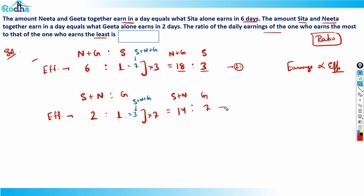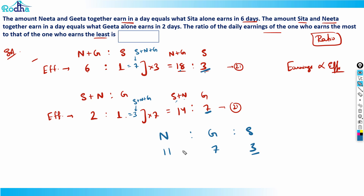From these values I can extract individual efficiencies. Sita = 3, Gita = 7, and since Sita + Nita = 14 and Sita = 3, Nita = 11. We can verify: Nita + Gita = 11 + 7 = 18. Correct! So the efficiency ratio of Nita : Gita : Sita = 11 : 7 : 3.